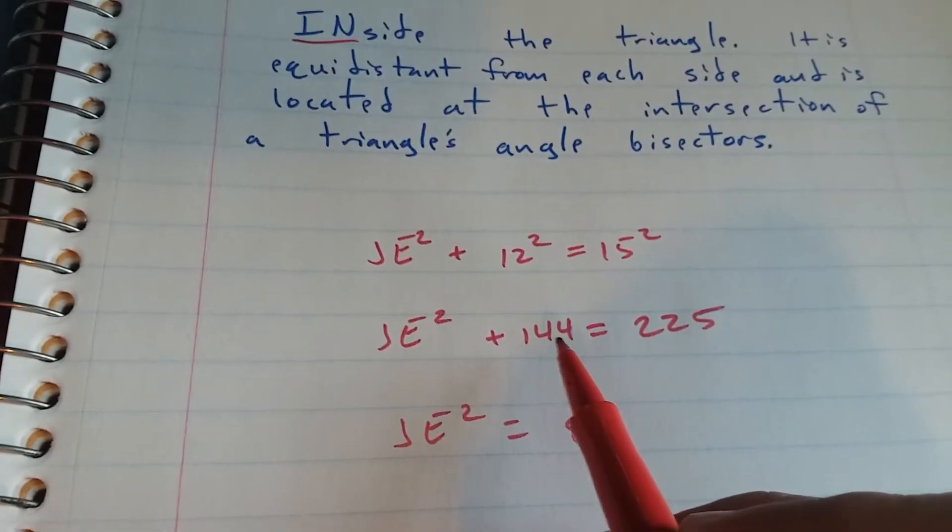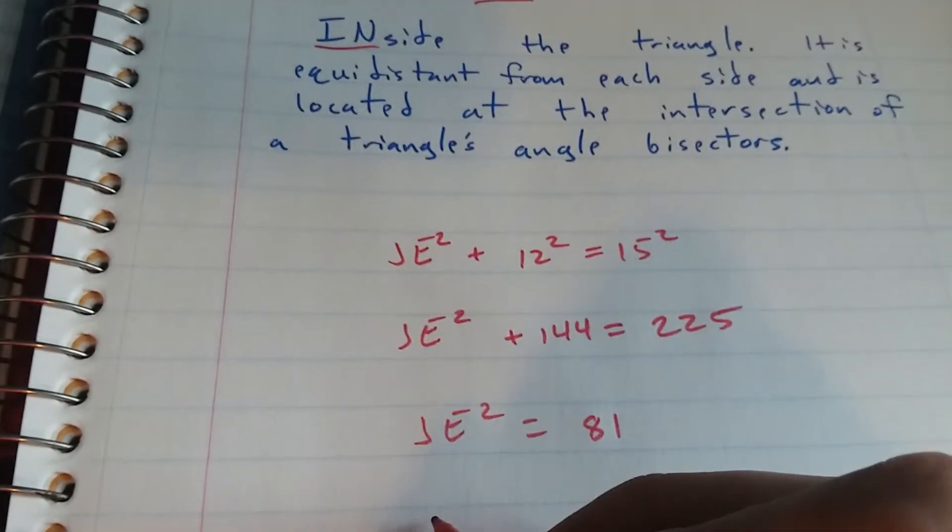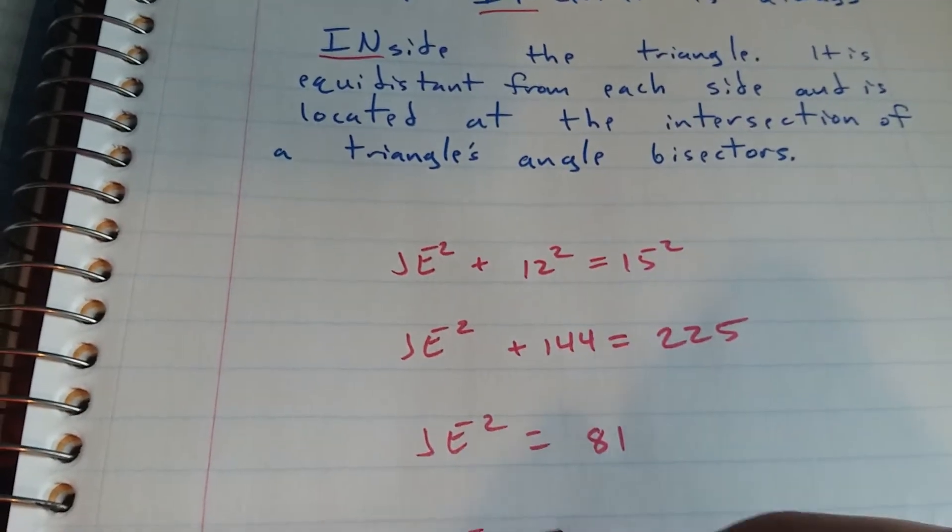By subtracting 144, we get this. Take the square root of both sides. JE equals 9.